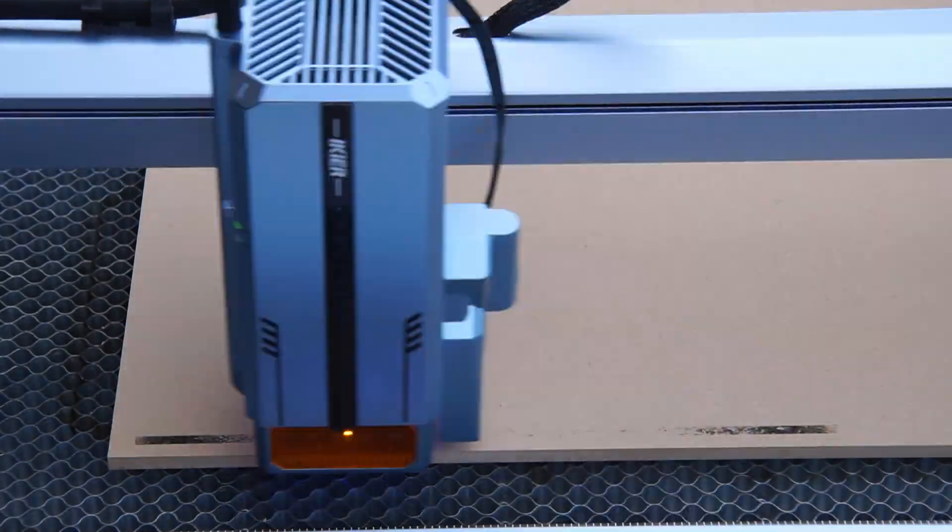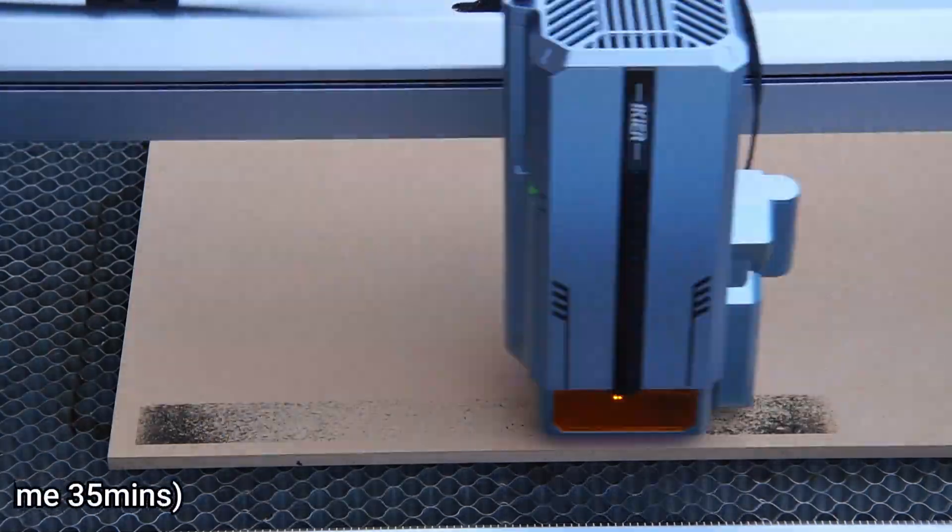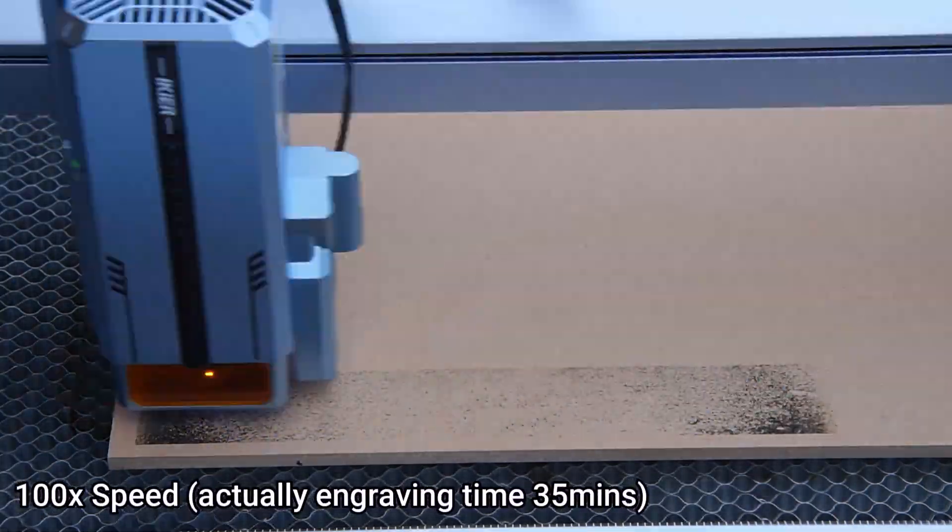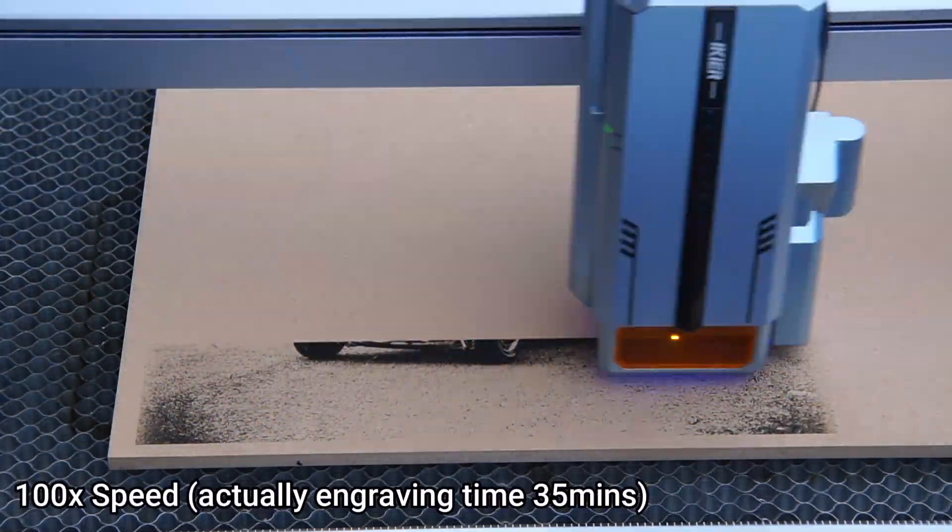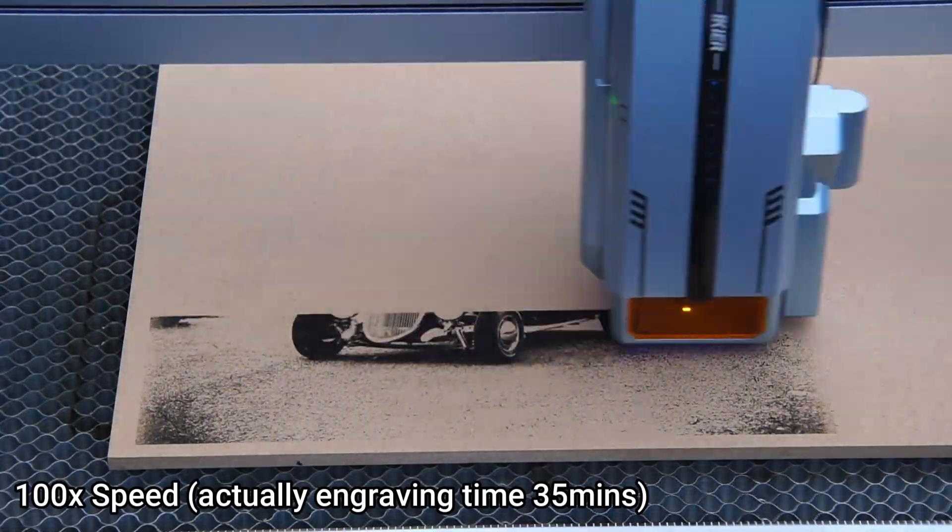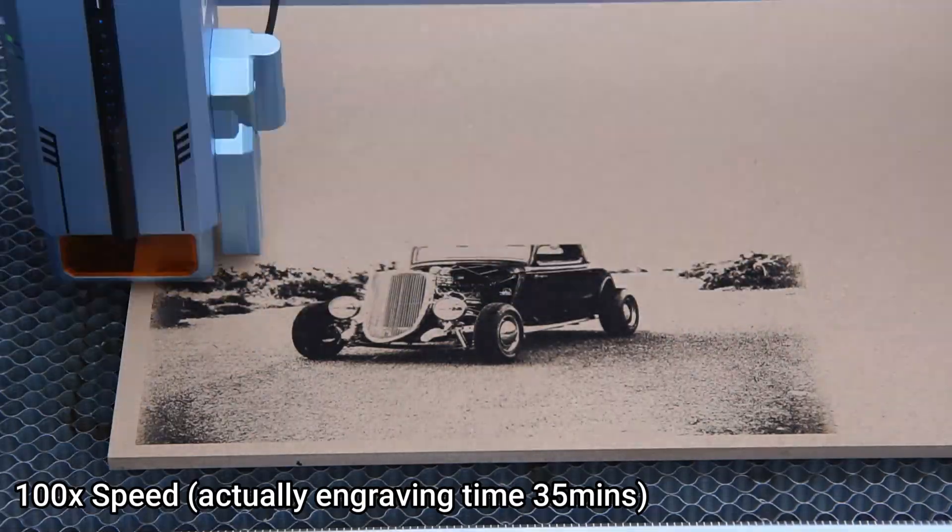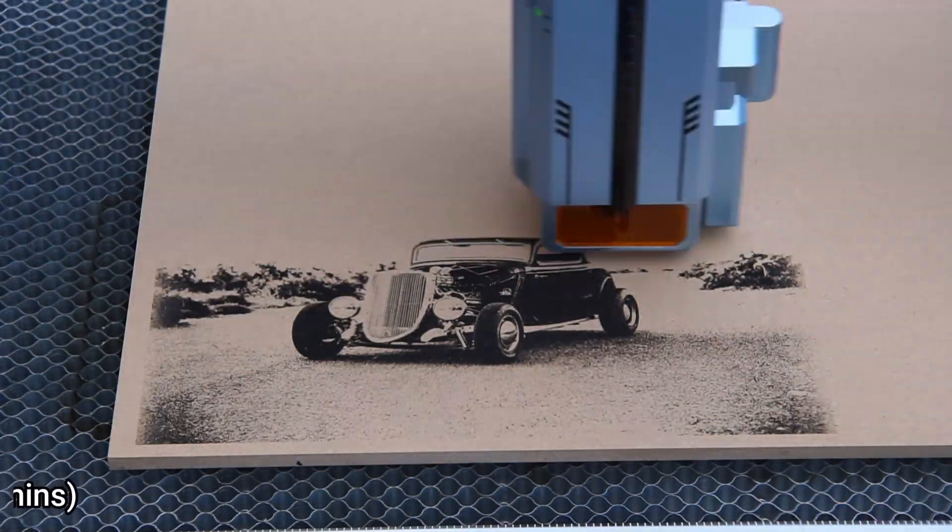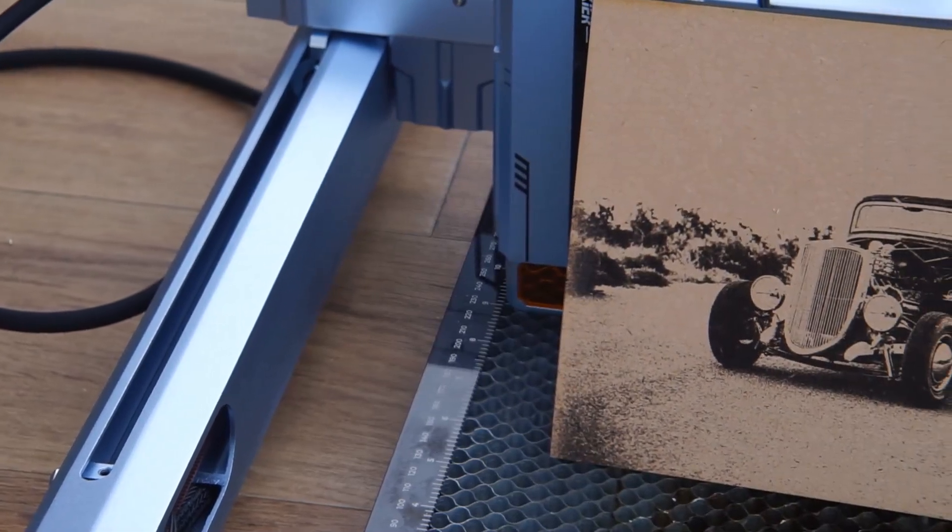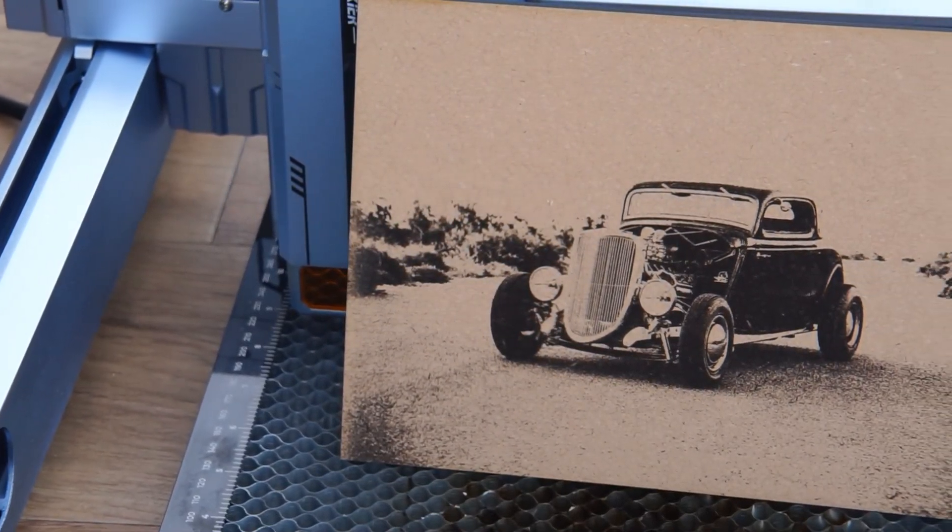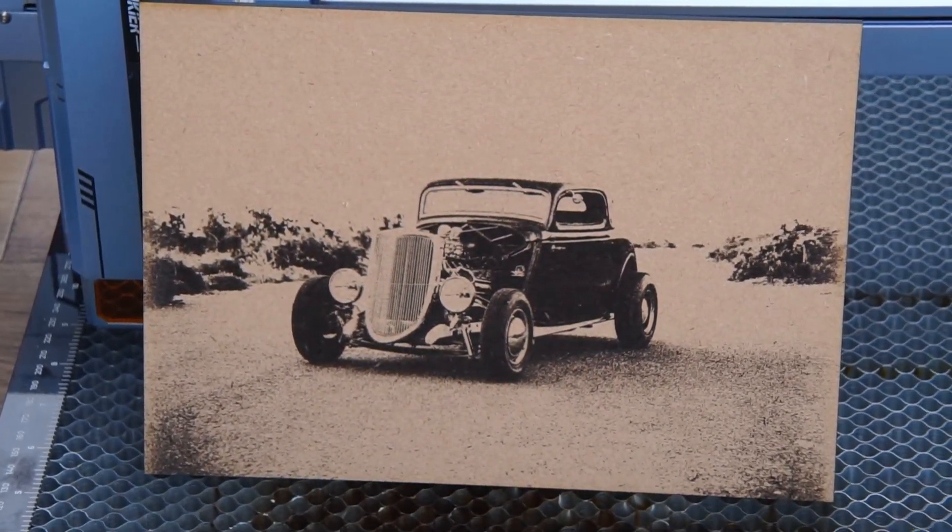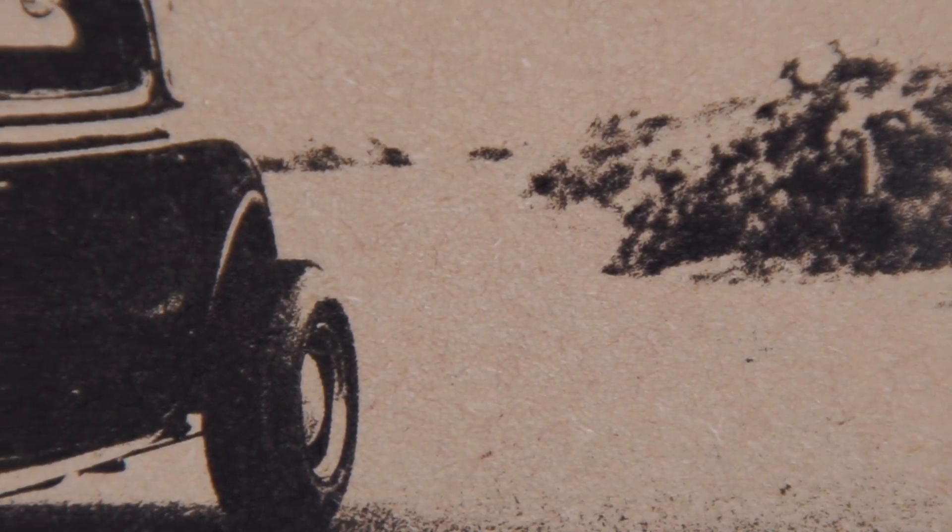Let's put these settings to use by burning an image onto MDF. This MDF sheet has been sprayed with a borax and water solution and allowed to dry, which improves the contrast of the image. As you can see, the results are excellent with a high detail image engraved onto our MDF sheet.